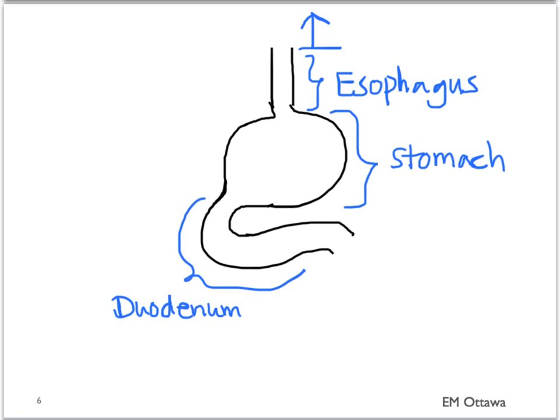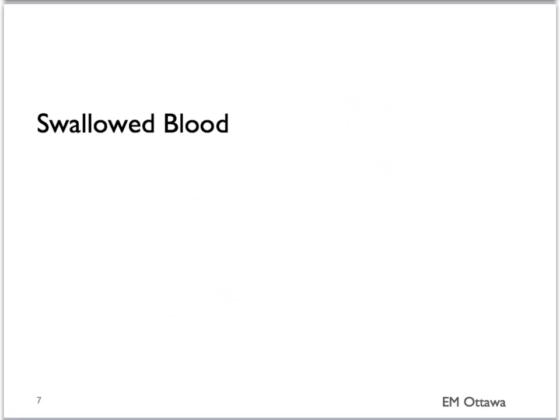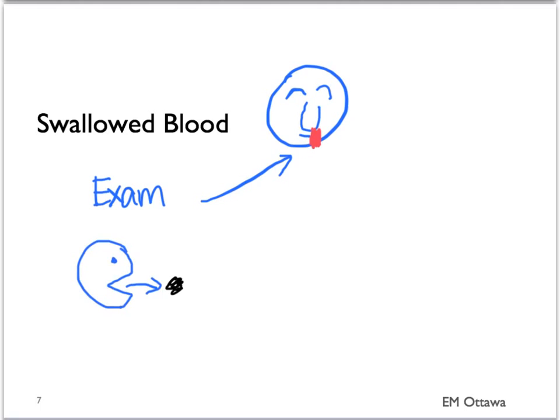First, proximal to the esophagus. If any blood proximal to the esophagus is being swallowed, then it will present as an upper GI bleed. The most often seen swallowed blood will be from epistaxis. Therefore, on presentation, you would want to ask the patient about any history of bleeding. You would also want to look for any obvious bleeding from the source. Swallowed blood can present as coffee ground emesis or melena.